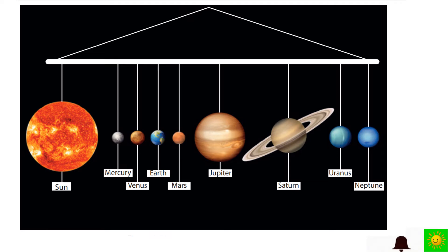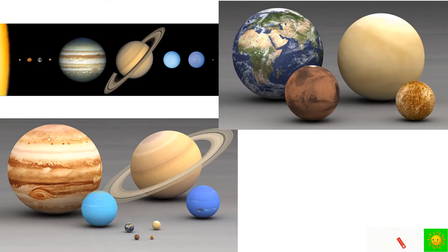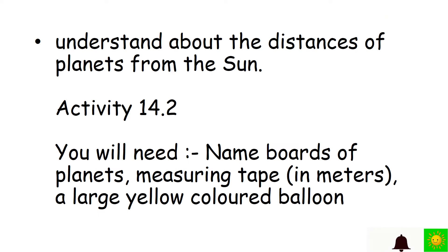The real ratio of the sizes of planets is not indicated in the model you made in Activity 14.1. The real ratio of the sizes of them is given in this figure. You can observe that.